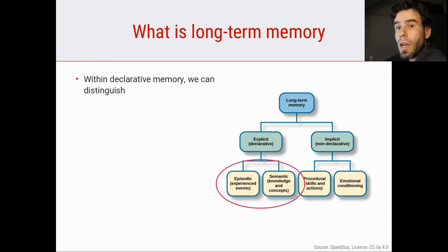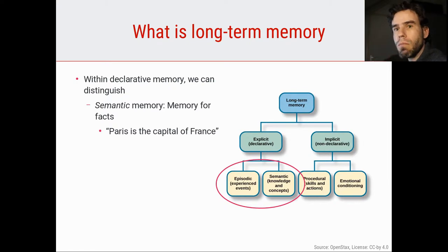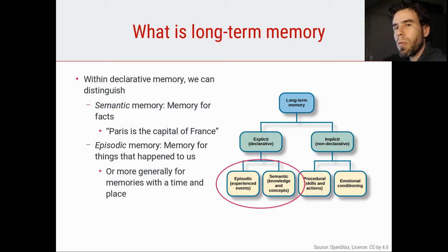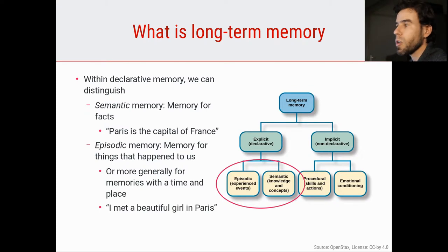If we focus on declarative memory, we can further distinguish semantic memory, which are memories for facts — for example, Paris is the capital of France. We contrast that with episodic memory, which are memories for things that happen to us, more generally memories that have a time and a place, memories for events. For example, 'I met a beautiful girl in Paris' would be an episodic memory — it has to do with me, a particular place, and a time.